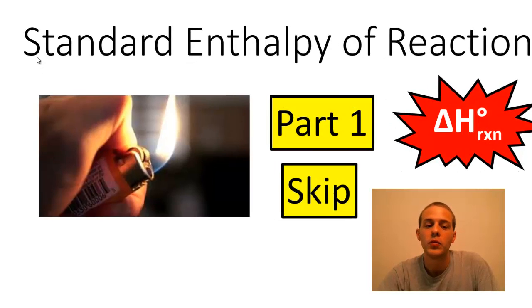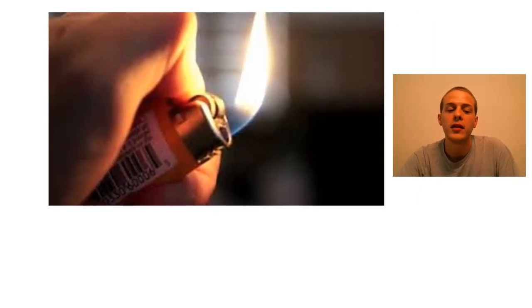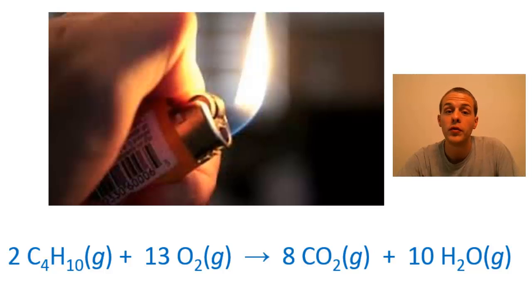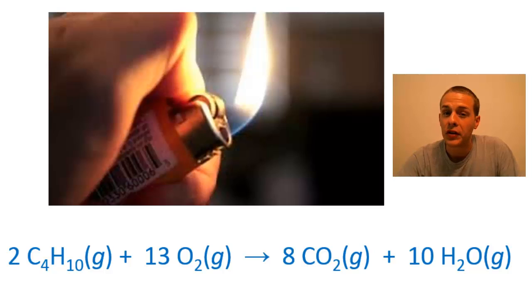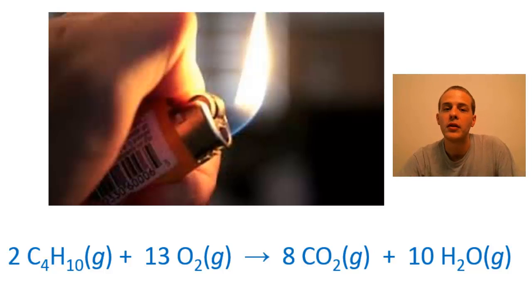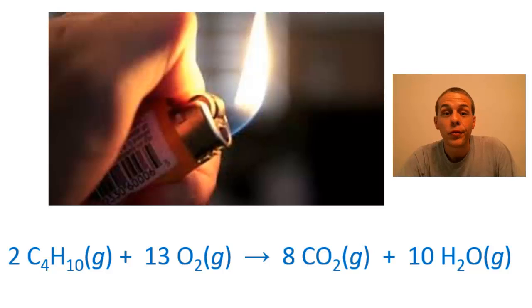So imagine we have this reaction right here — the combustion of butane, given by this chemical equation. We've got two moles of butane reacting with 13 moles of oxygen to produce 8 moles of carbon dioxide and 10 moles of water. Let's say we want to find the standard enthalpy of reaction for this reaction. One way to do it might be to carry out the reaction, take careful measurements, and figure out the amount of heat given off under standard conditions. But that's pretty complicated, and it turns out we don't have to go through all that trouble. We can actually look a few numbers up in a table and calculate the standard enthalpy of reaction without ever having to run the reaction — figuring out whether it's exothermic or endothermic just by doing a couple of fancy calculations.